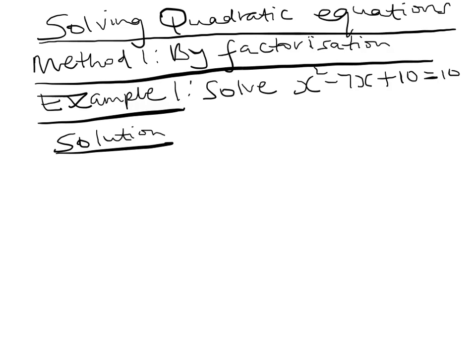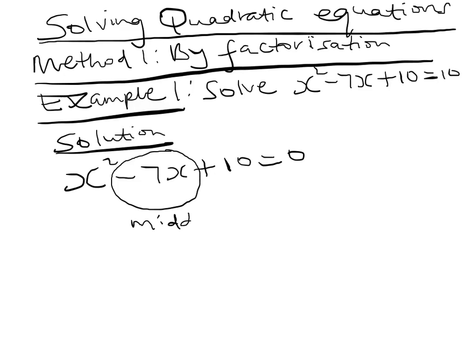To solve this equation, x squared minus 7x plus 10 equals zero, we first factorize the expression on the left-hand side and equate to zero. We identify the middle term, which is negative 7x. We also find the product of the first term and the last term, which is 10x squared.